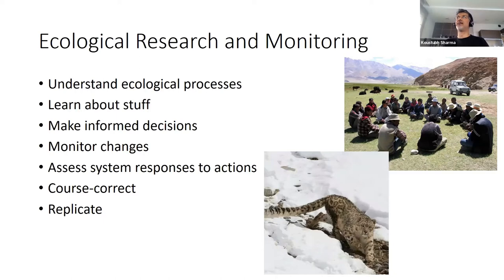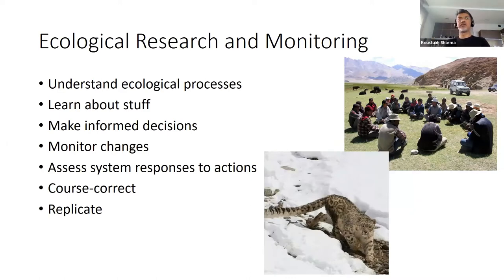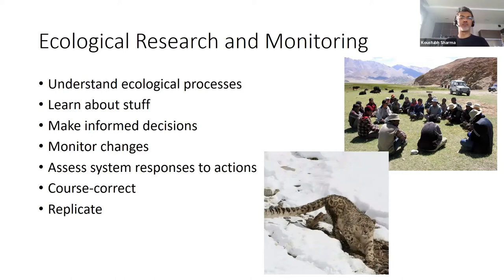Monitoring programs allow us to do course corrections at multiple levels. One element we often forget — especially as conservationists or researchers — is that whatever you're doing should be replicable. By replicable, I mean that if someone does a survey in year one and a different person goes the next year, all those datasets should be comparable. If they're not, there's a bias and we'll never be able to compare figures. These are challenges we often face with long-term monitoring programs.